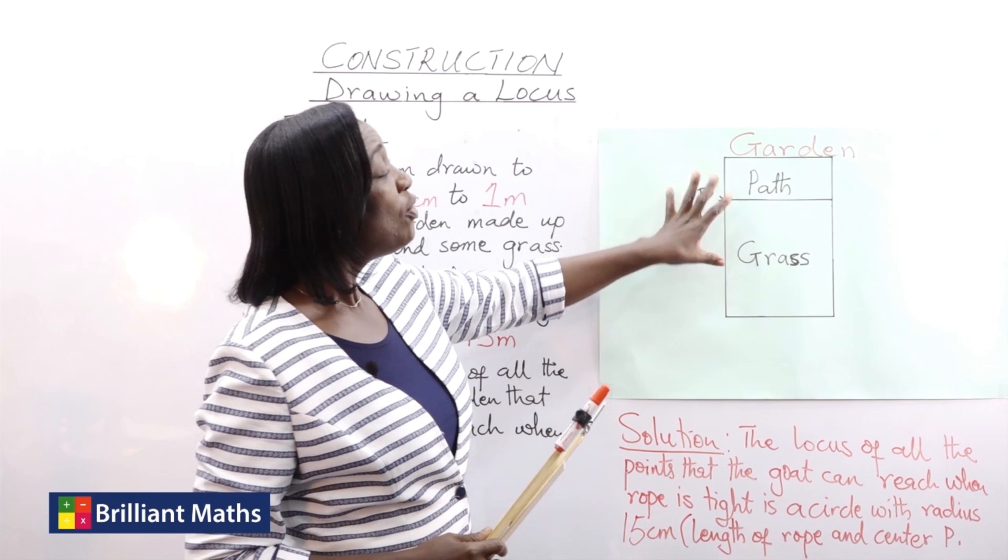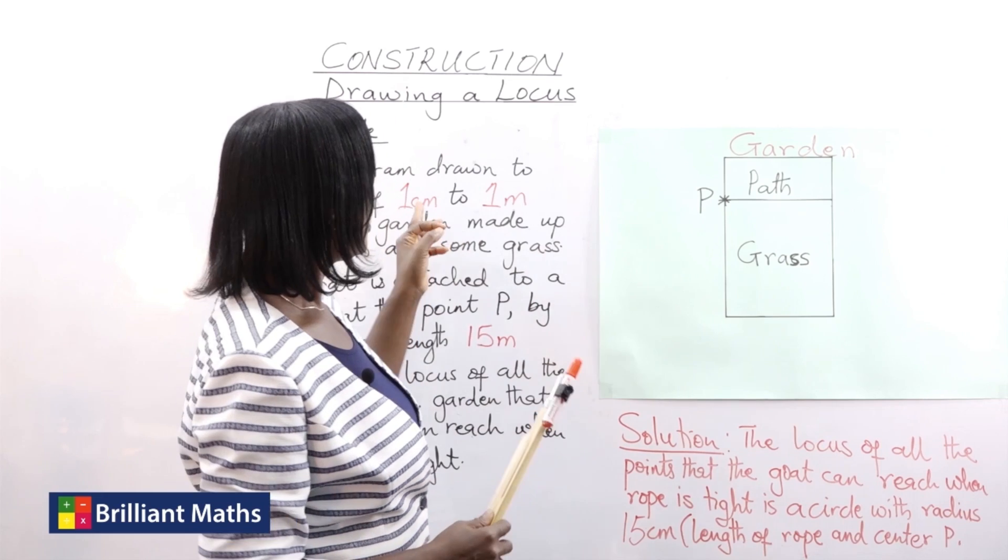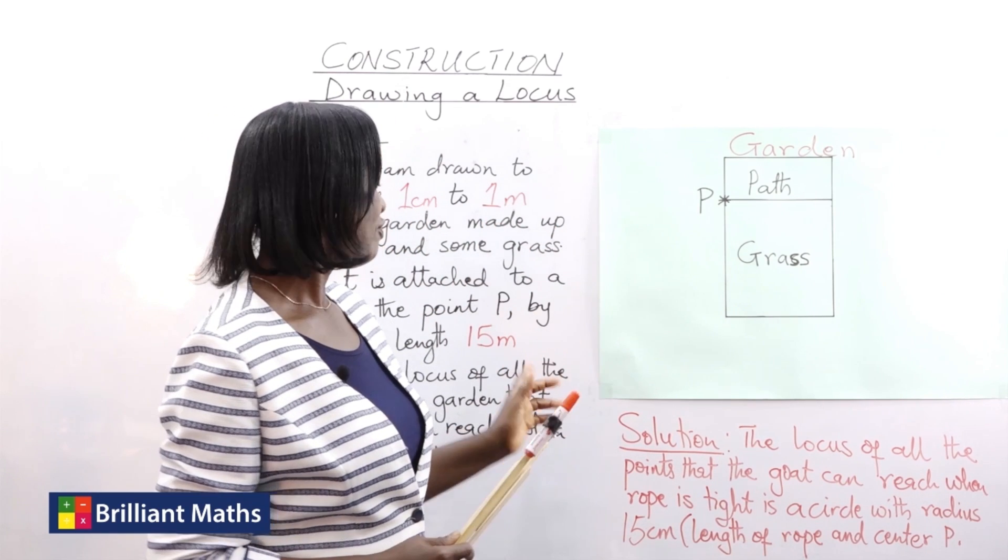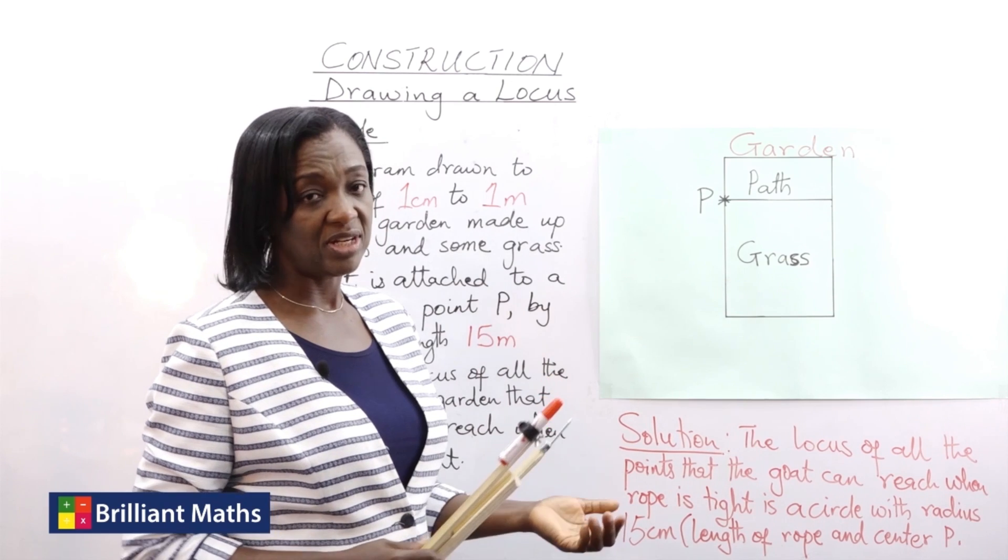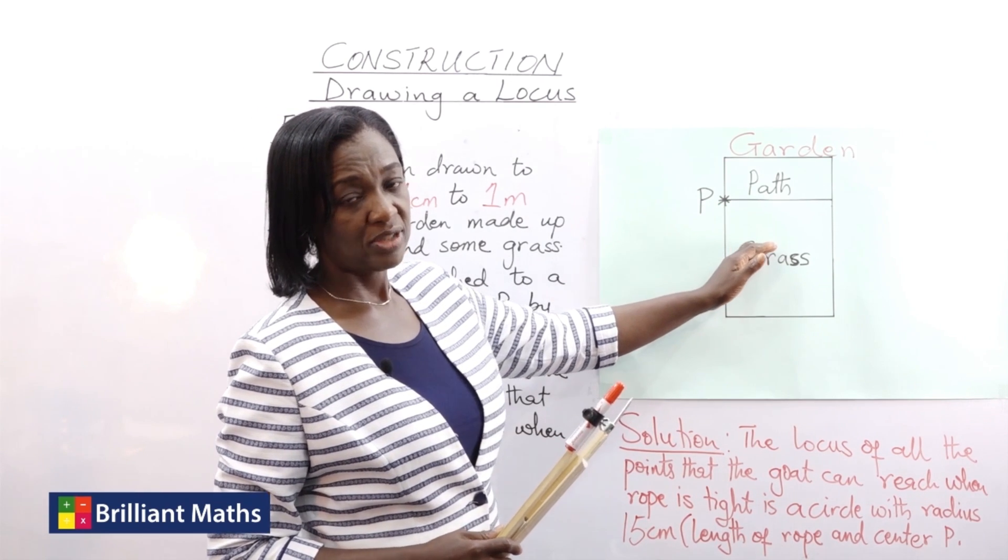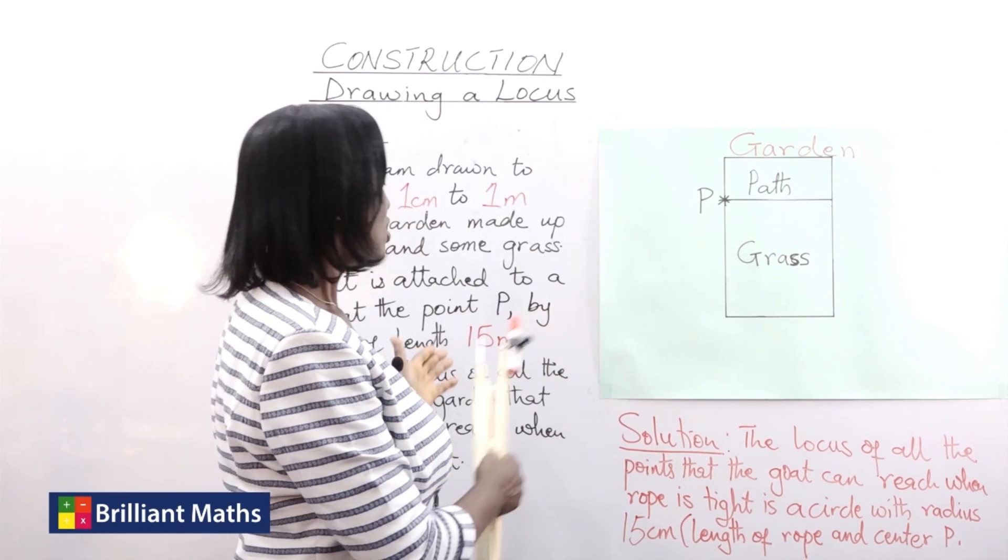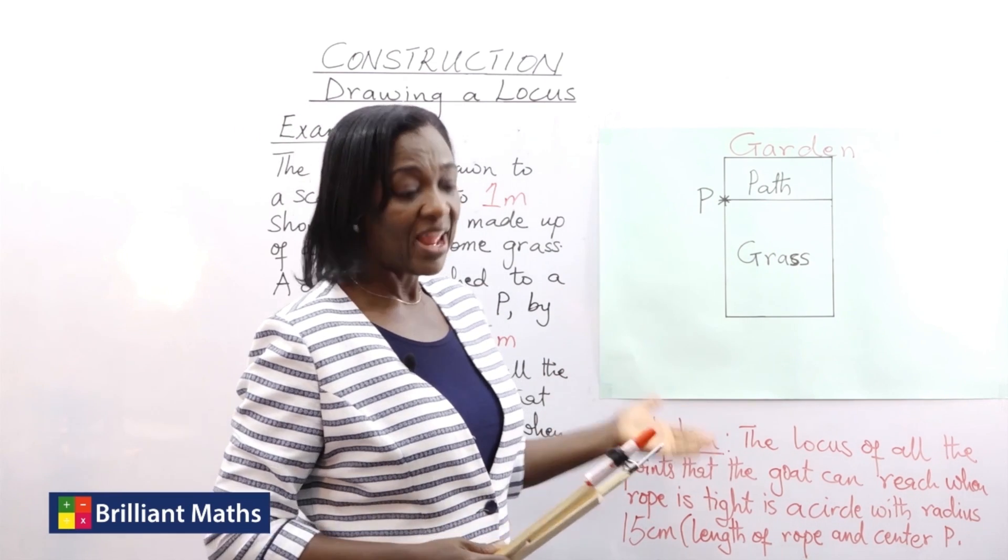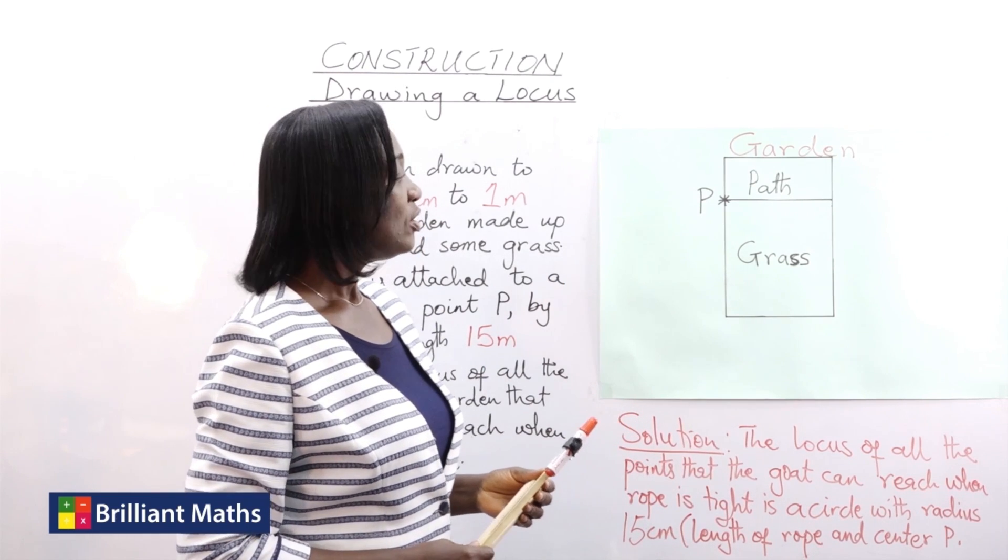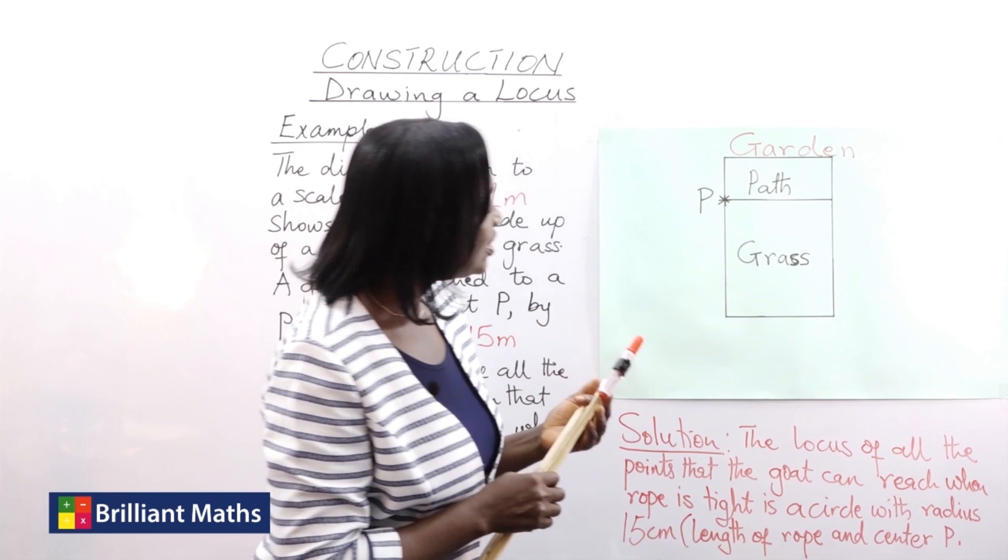So from our scale drawing, one centimeter represents one meter, so we are going to have a rope of 15 centimeters on the board. That's what we are going to draw since we are drawing to scale because we can't draw 15 meters inside this room, much less on the board.